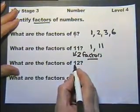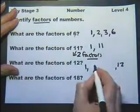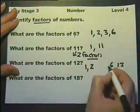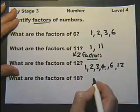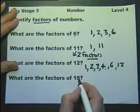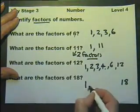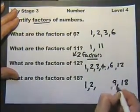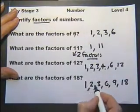What are the factors of twelve? Well there's one and the number itself, and you've got two because two sixes are twelve, and you've got three because three fourths are twelve. What are the factors of eighteen? You've got one and the number itself, then you've got two and two nines are eighteen, and you've got three because three sixes are eighteen.